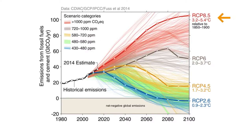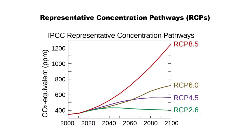For example, the RCP 2.6 scenario means that the climate system gains a total of 2.6 watts per square meter by 2100, while RCP 8.5 means a gain of 8.5 watts per square meter. To put these values in perspective, the average energy input by the sun into our atmosphere is 78 watts per square meter.